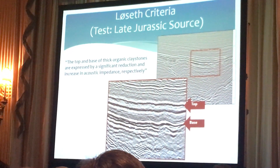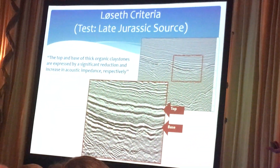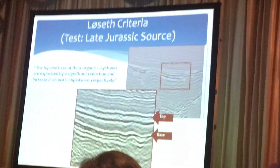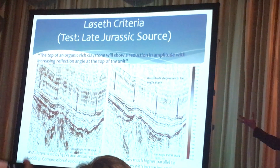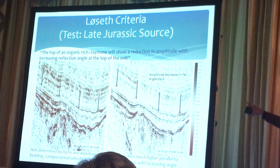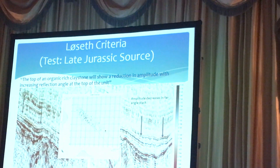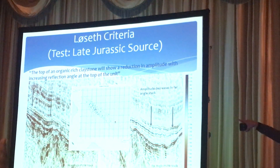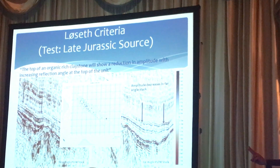Look at the top of the source rock — the reduction in acoustic impedance. This is SEG negative polarity, so black is a peak, a soft kick. And you see at the base we have the expected response: it's an increase in acoustic impedance. That meets the first criteria. Now we look at the amplitude variation with angle — the near angle stack on your left, the far angle stack on your right — and you'll see how the amplitude dims in the far angle stack. So this is just by sight, but we have done our full complete AVO analysis.